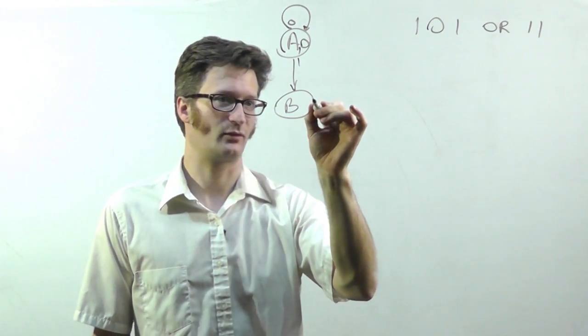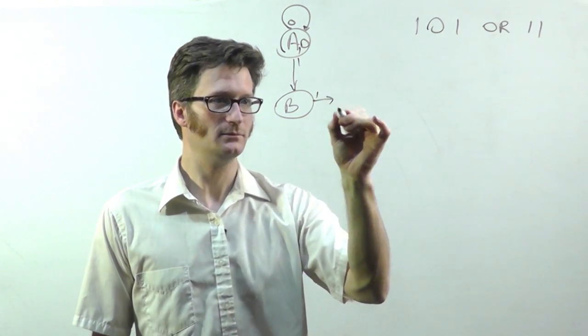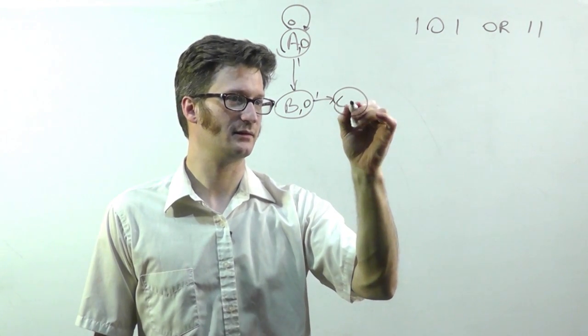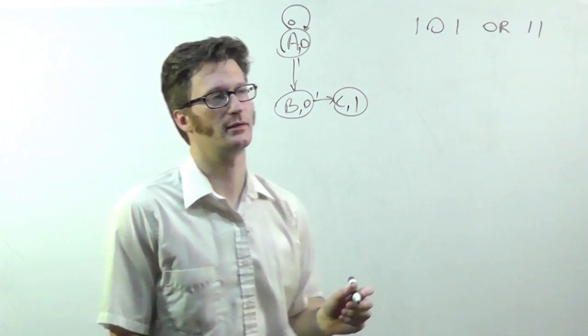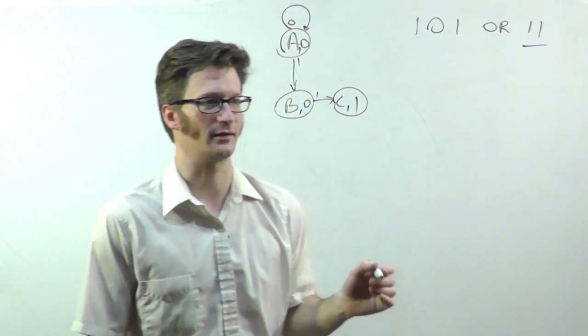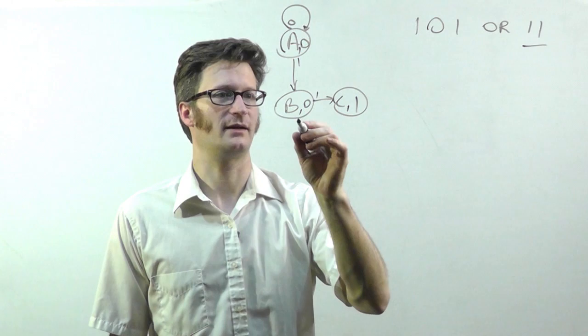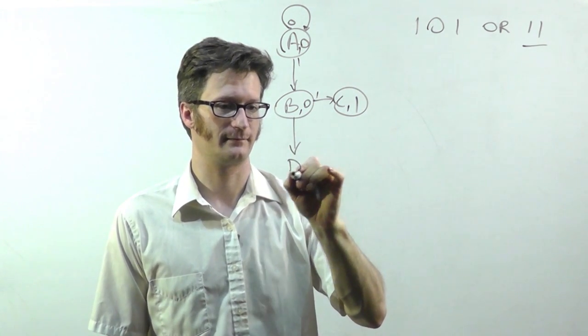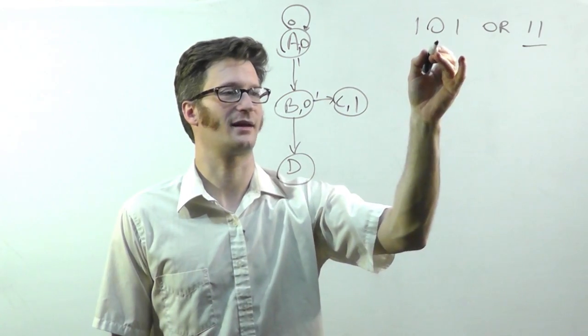From state B, if I detect 1, I'll get to state C, which will output a 1, indicating that I have detected this sequence right here. If I detect a 0, I move ahead to state D, because we may be detecting this.